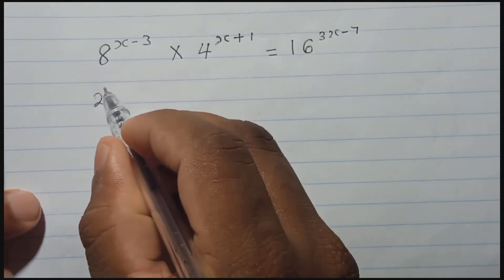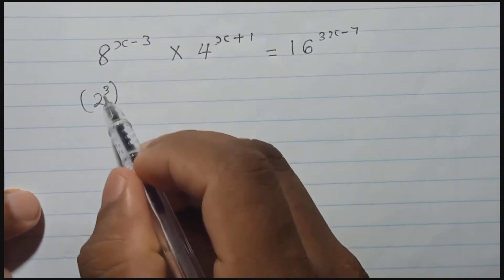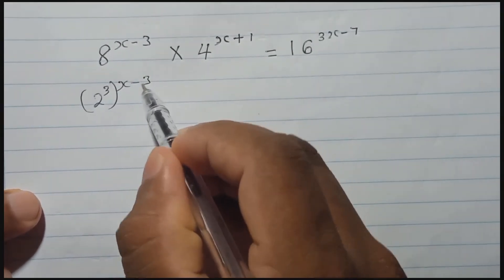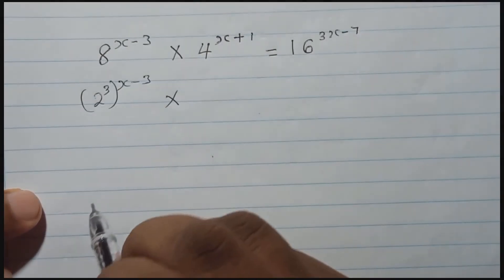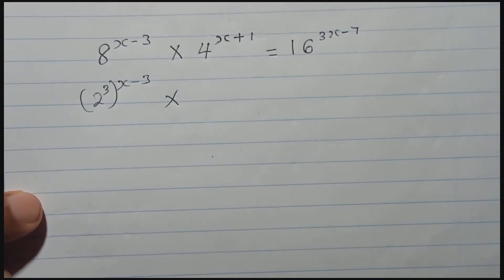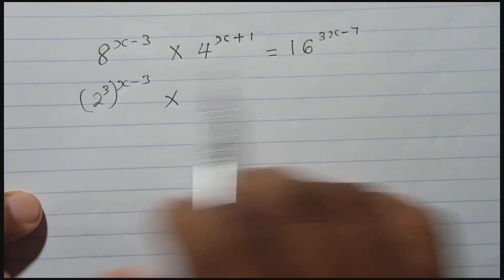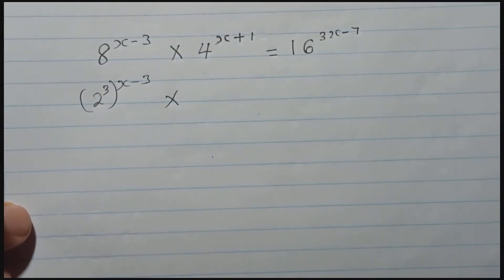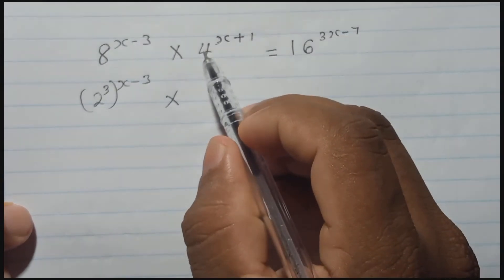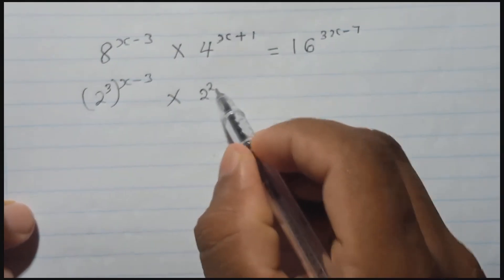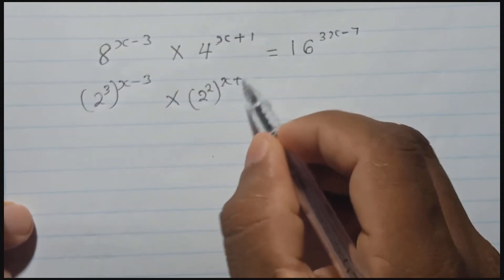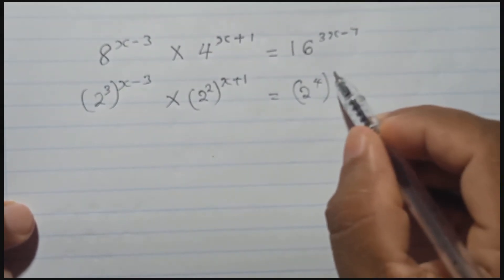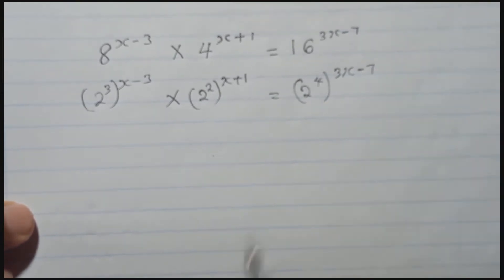For 8, I can write 2 to the power 3, and this index will be x minus 3. And for 4, when you look at this type of question, you need to check whether you can write everything with the same base. So 4 means 2 to the power 2, with index x plus 1. And 16 means 2 to the power 4, with index 3x minus 7.